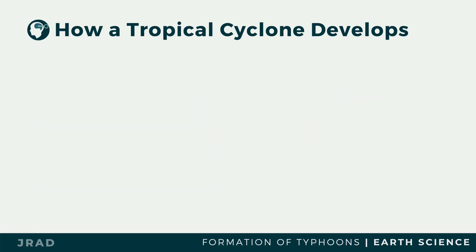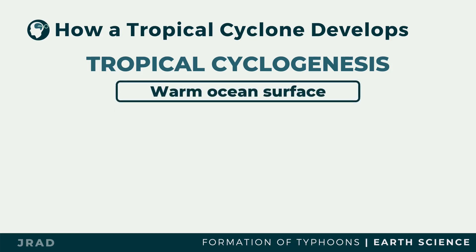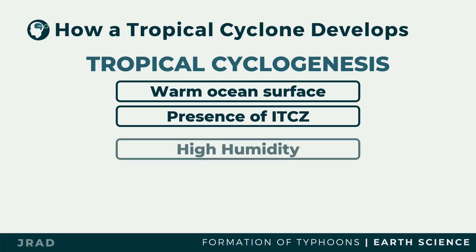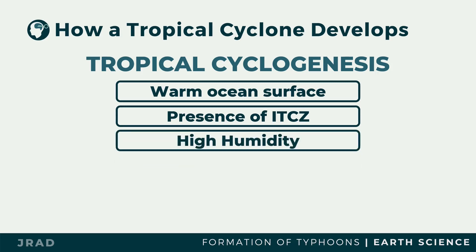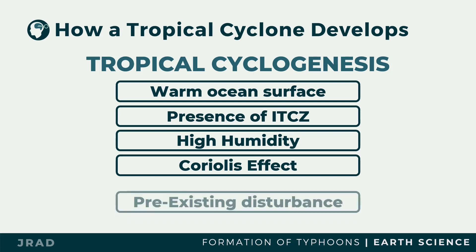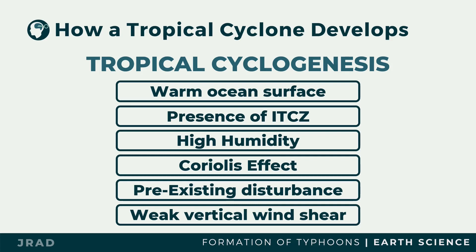The tropical cyclone undergoes a process of development called tropical cyclogenesis. This process includes warm ocean waters of at least 26.5 degrees Celsius throughout a sufficient depth of about 50 meters; an atmosphere which cools fast enough with height to be potentially unstable to convection; relatively moist layers about 5 kilometers from Earth's surface; enough Coriolis force to cause cyclonic rotation; a pre-existing disturbance near the ocean surface; and less than 10 meters per second of vertical wind shear between the ocean surface and the atmosphere.